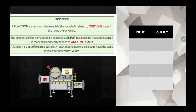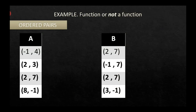Let's determine: is it a function or not? For ordered pairs in example A — (negative 1, 4), (2, 3), (2, 7), (8, negative 1) — we observe the x-values. Since (2, 3) and (2, 7) contain the same domain value of 2 mapping to two different outputs, therefore A is not a function.